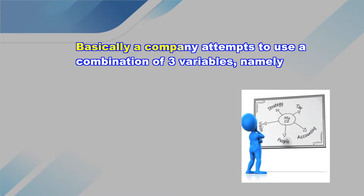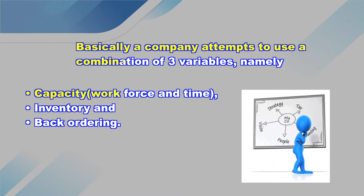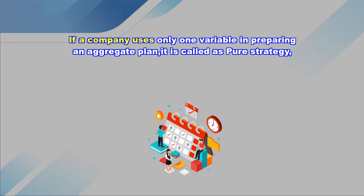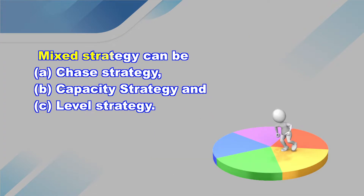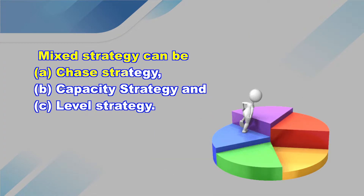Basically, a company attempts to use a combination of three variables: capacity, inventory, and back ordering. If a company uses only one variable in preparing the aggregate plan, it is called a pure strategy. When a company uses more than one variable, it is called a mixed strategy. Mixed strategy can be chase strategy, capacity strategy, or level strategy.